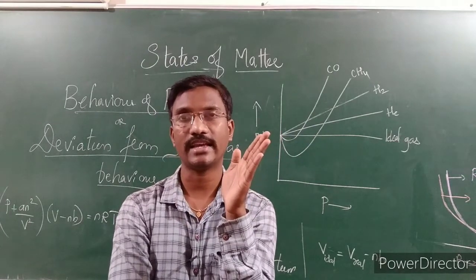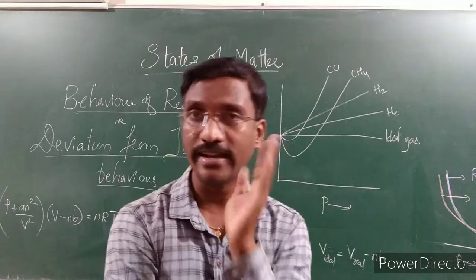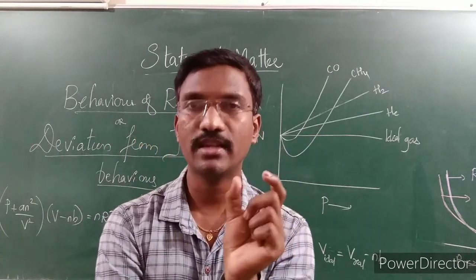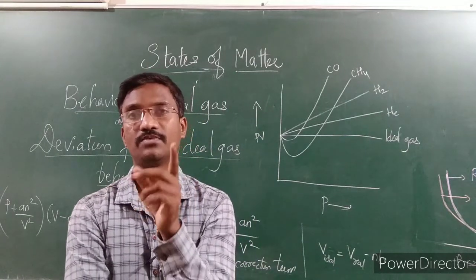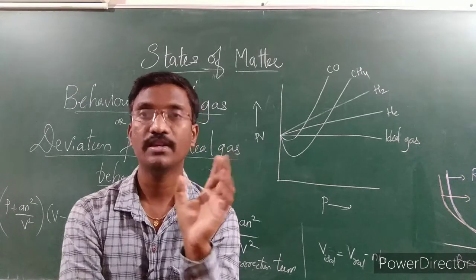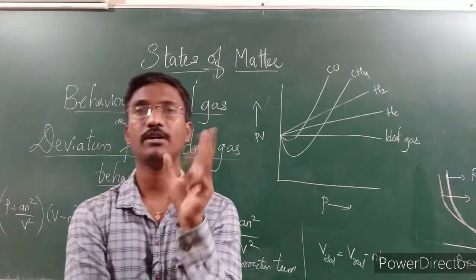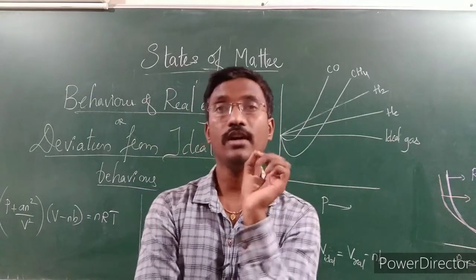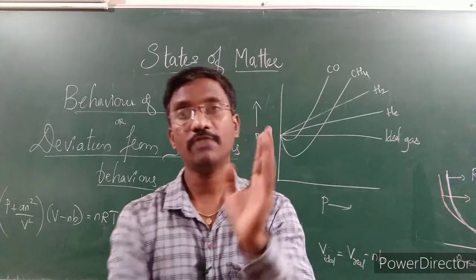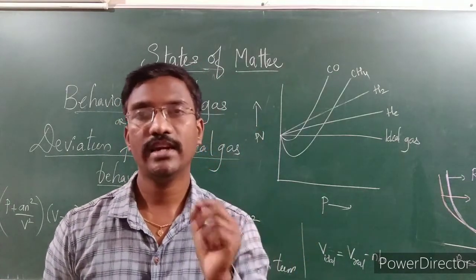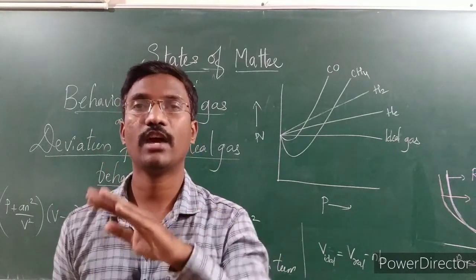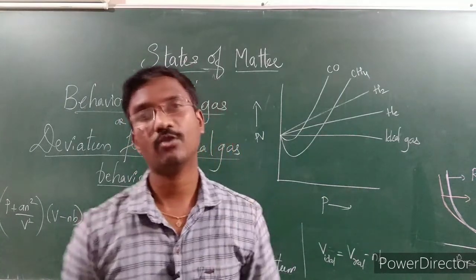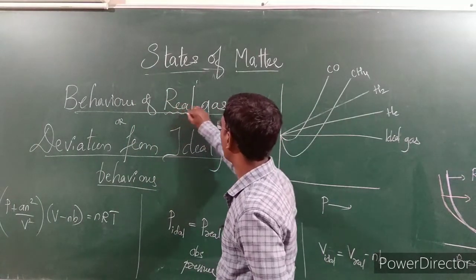Some gases, even though they are ideal, under particular conditions they are not obeying the ideal gas expression — they are deviating from it. In Charles' law, Boyle's law, and other laws, we keep two conditions constant and two are variable. If those conditions are varied, the ideal gas expression is going to vary, and such gases are called real gases.